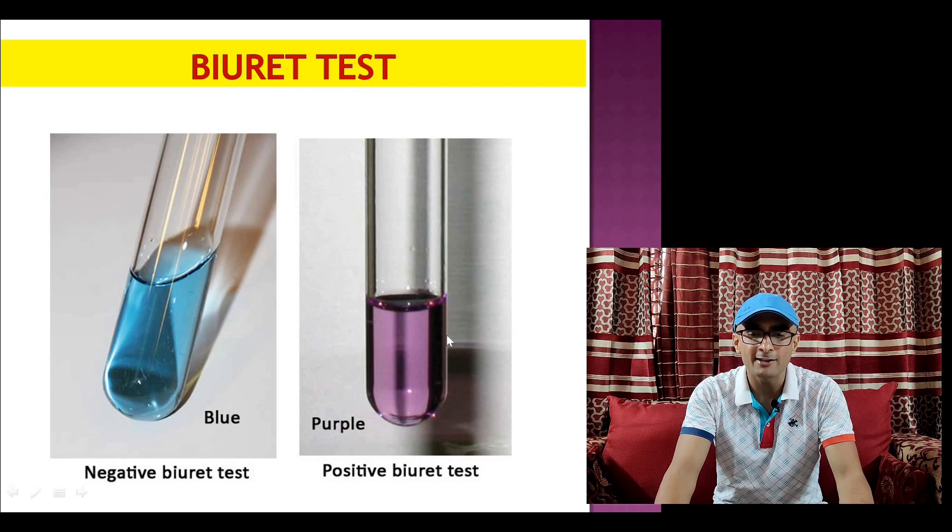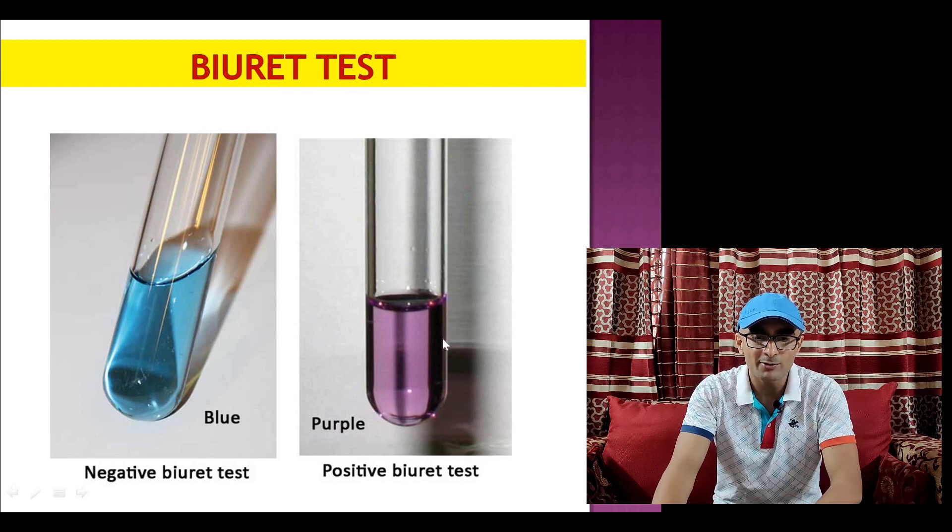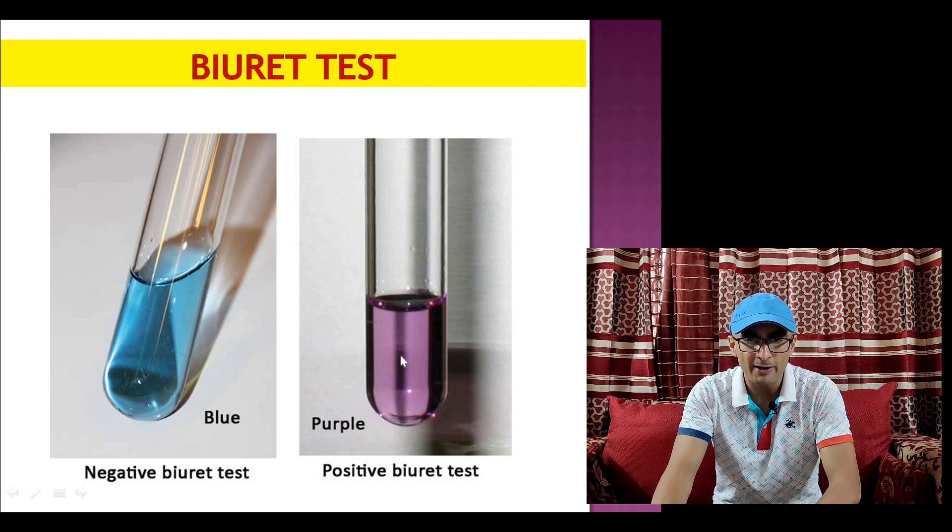Along with the protein, any compound which has nitrogen atom can also give purple color with the Biuret test.